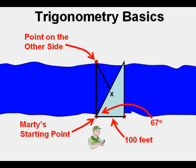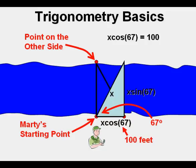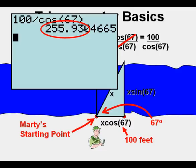He labels the hypotenuse X. He labels the bottom X cosine 67 degrees. And he labels the right side X sine 67 degrees. Since he knows the base of the triangle he sets up the equation X times the cosine of 67 degrees equals 100 feet. He uses elementary algebra to solve for X by dividing both sides of the equation by cosine 67 degrees. Cosine 67 degrees over cosine 67 degrees cancel on the left side. So he calculates X to be about 256 feet.